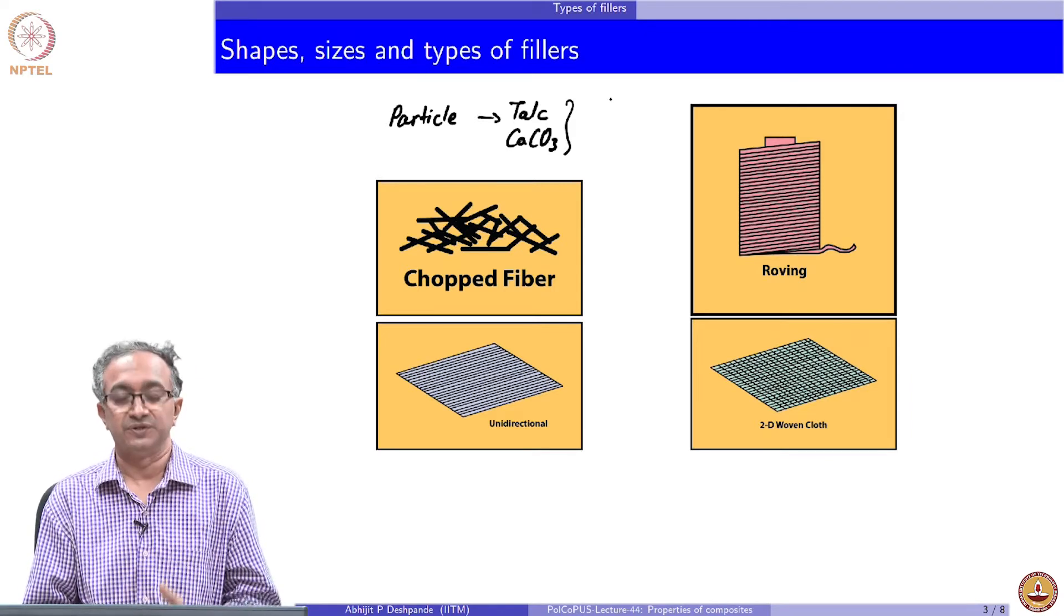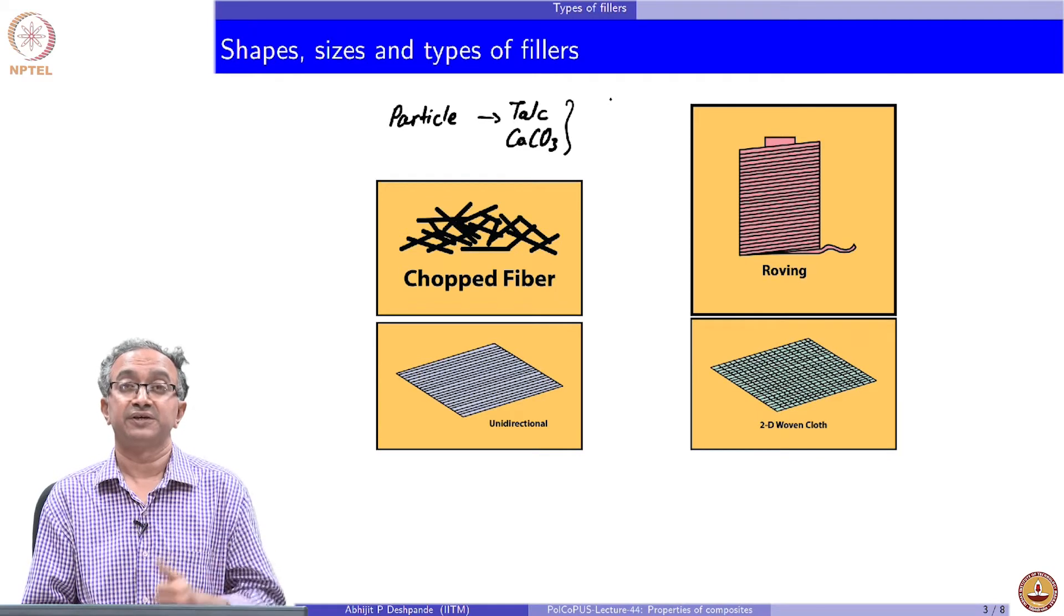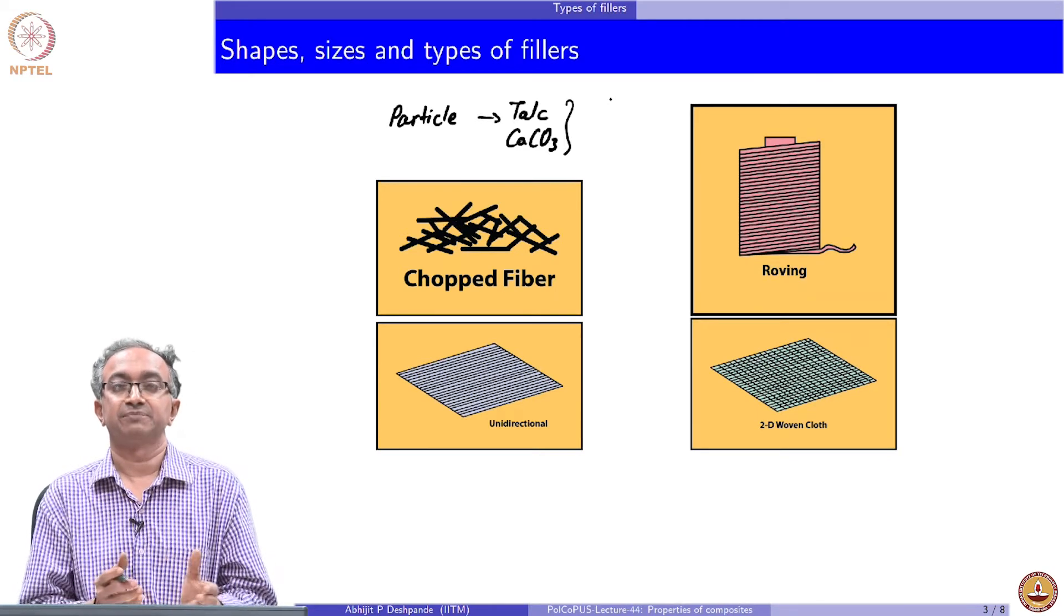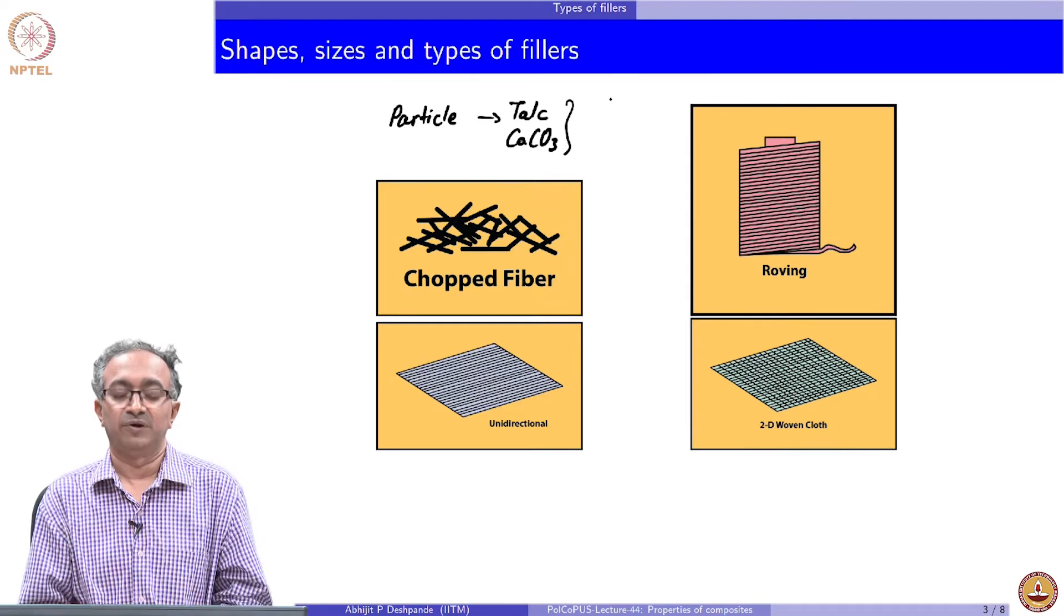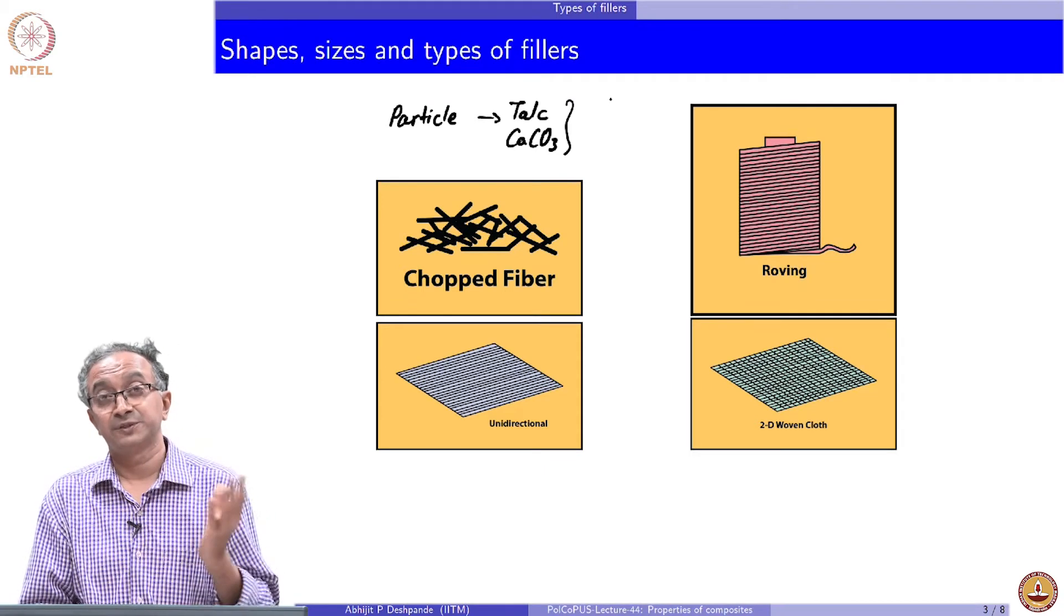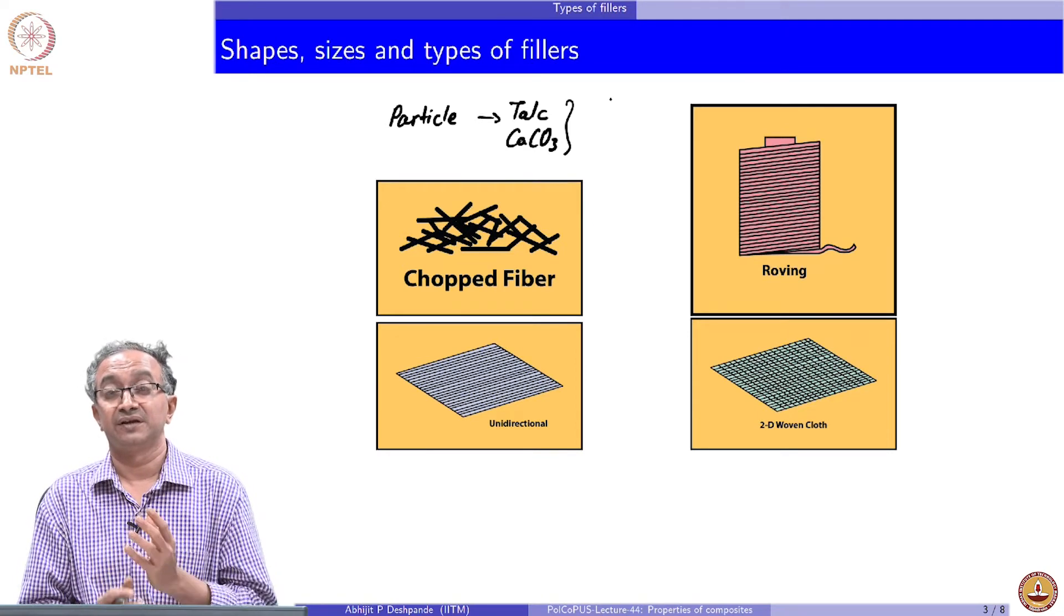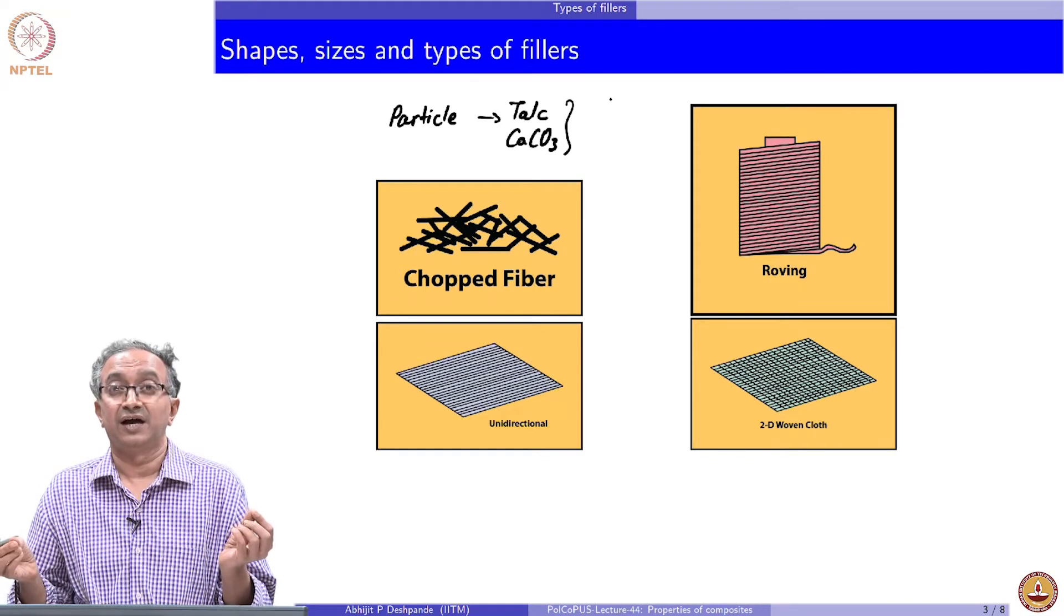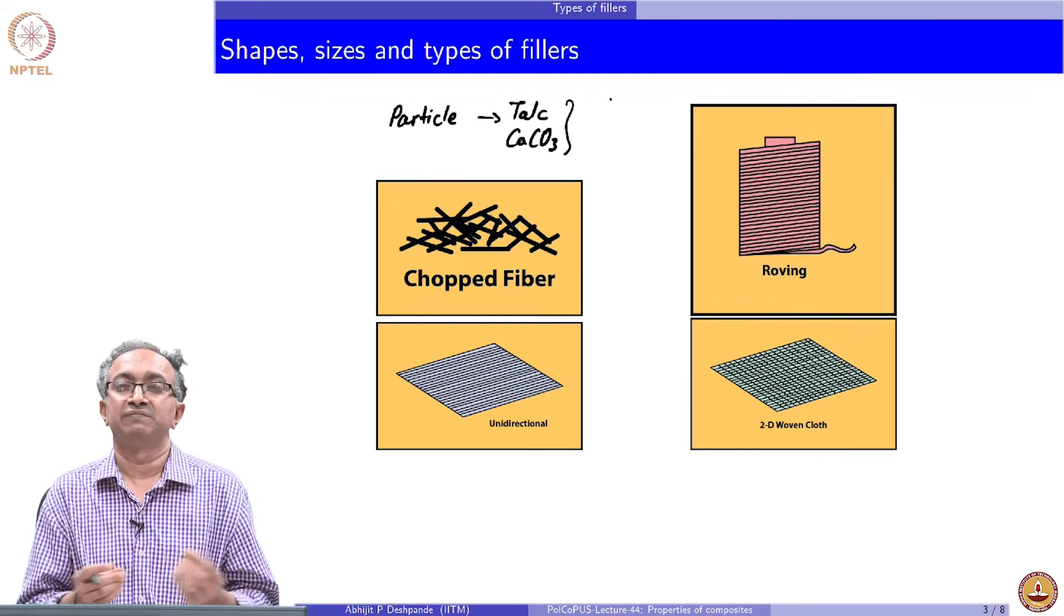But quite often particulate fillers are added as mineral fillers or fillers which can reduce cost. They of course modify properties also. Stiffness can improve, modulus can improve, barrier properties can improve. However, it may also happen that strength may decrease depending on the specific interaction between the filler that is added and the polymeric material. When we start increasing the aspect ratio of the fiber, we saw this already in an earlier lecture, that ease of processing becomes less and less when we increase the aspect ratio of the filler. But property improvement is more and more when we add.